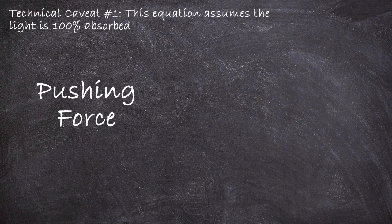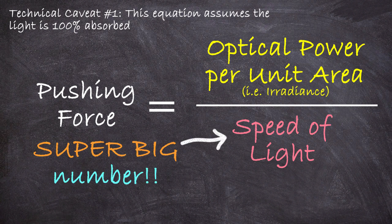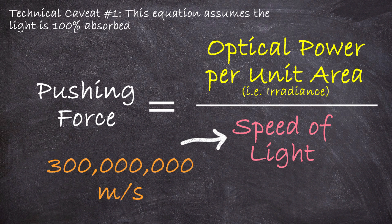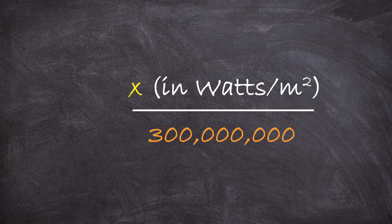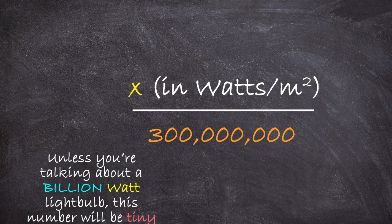To figure out the pushing force, you take the optical power per unit area and divide it by the speed of light. And the thing is, the speed of light is kind of a huge honking number. It's 300 million meters per second. So if you take something and divide it by a very, very big number, like 300 million, you're going to get a very, very small number.